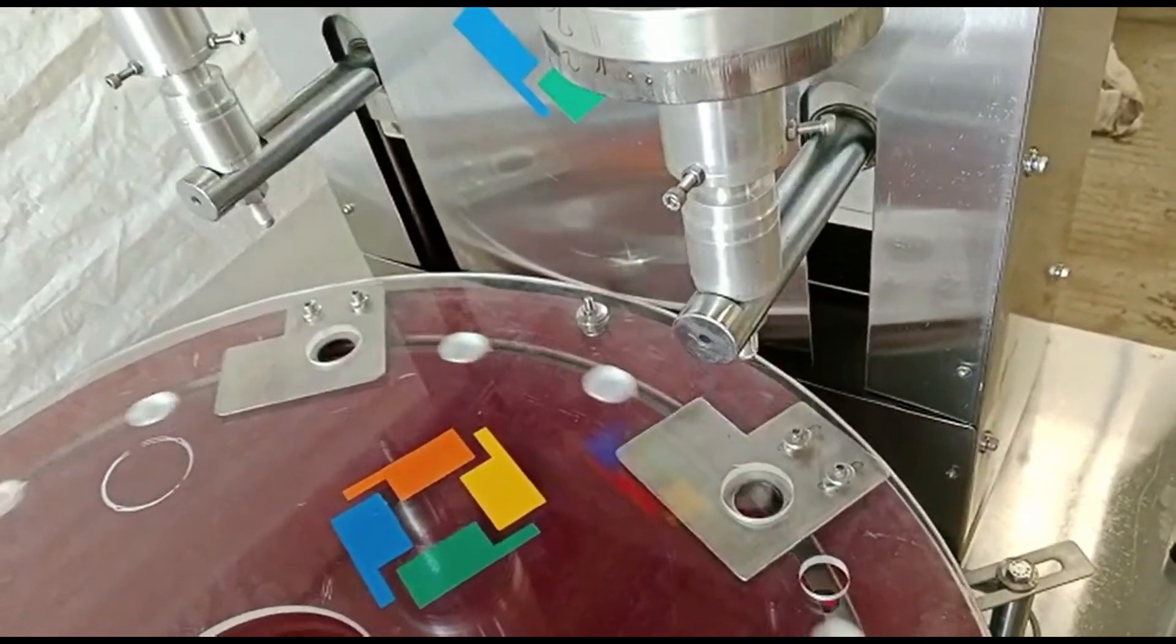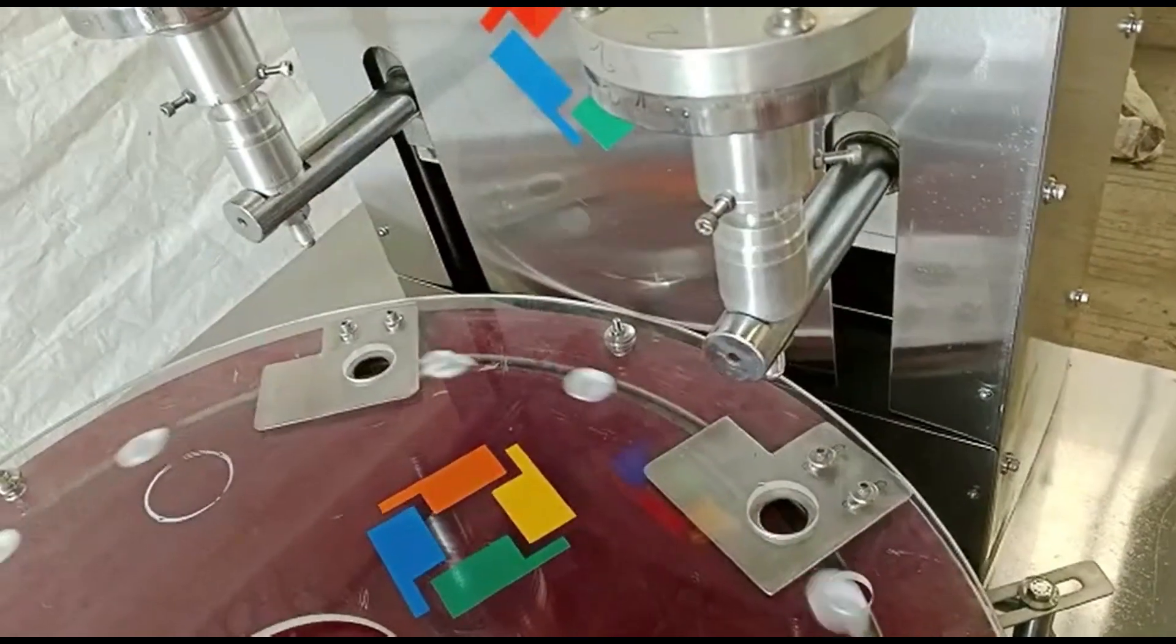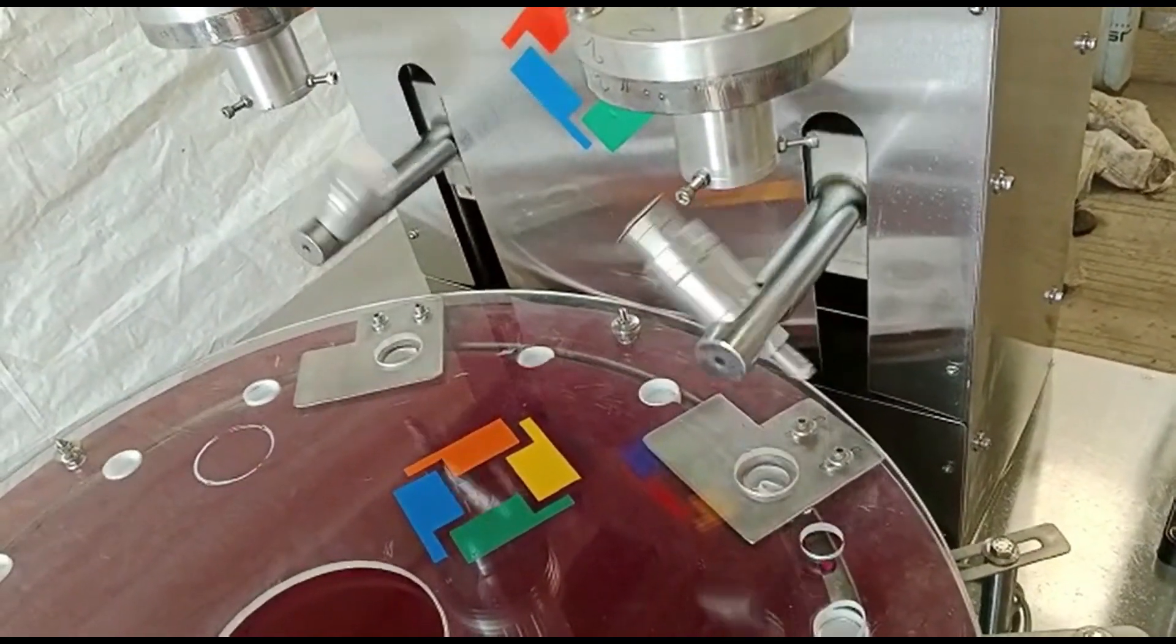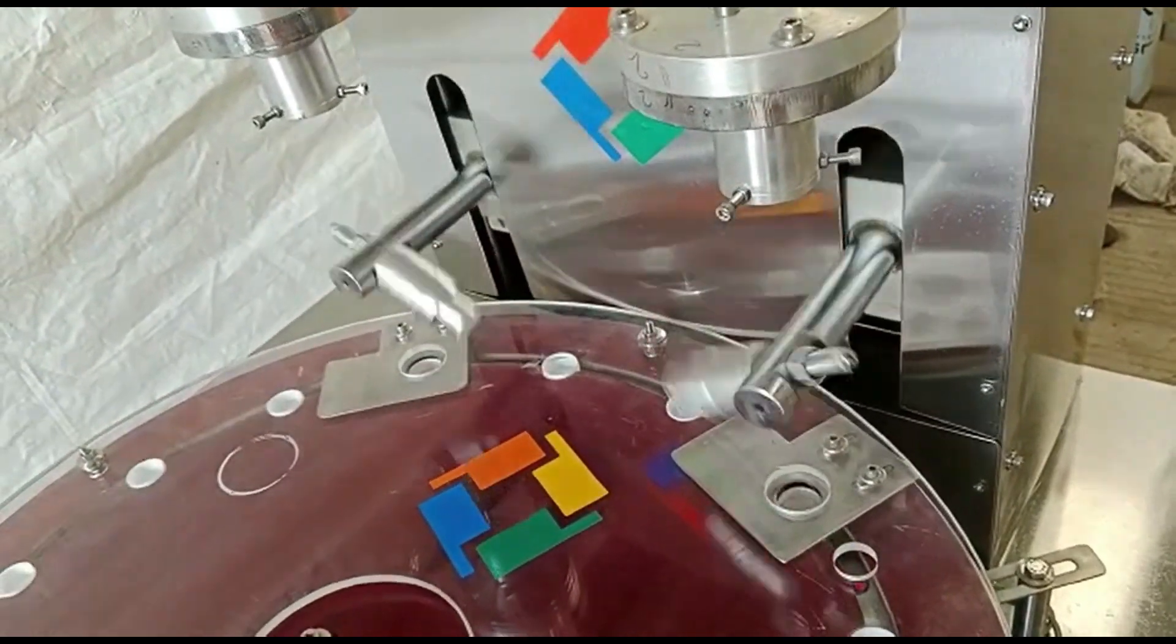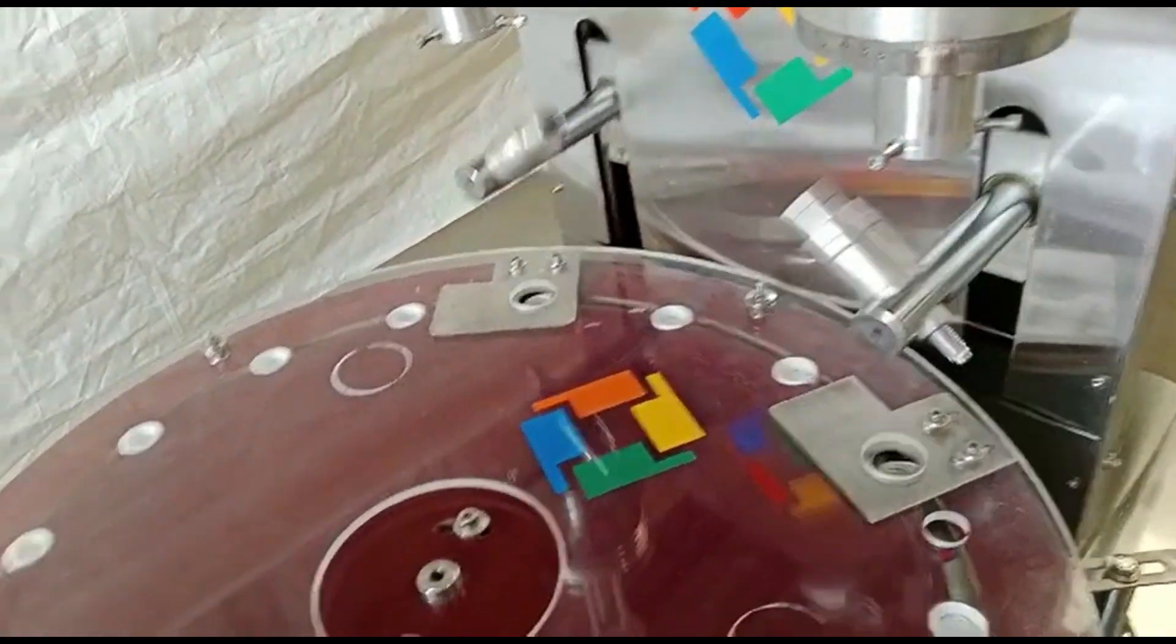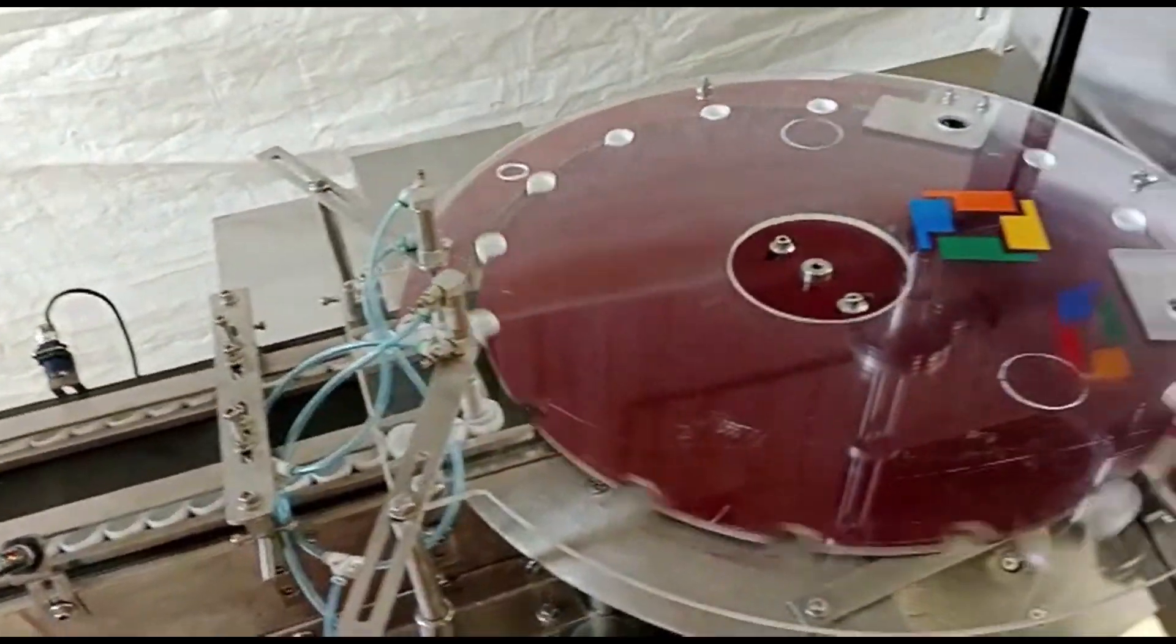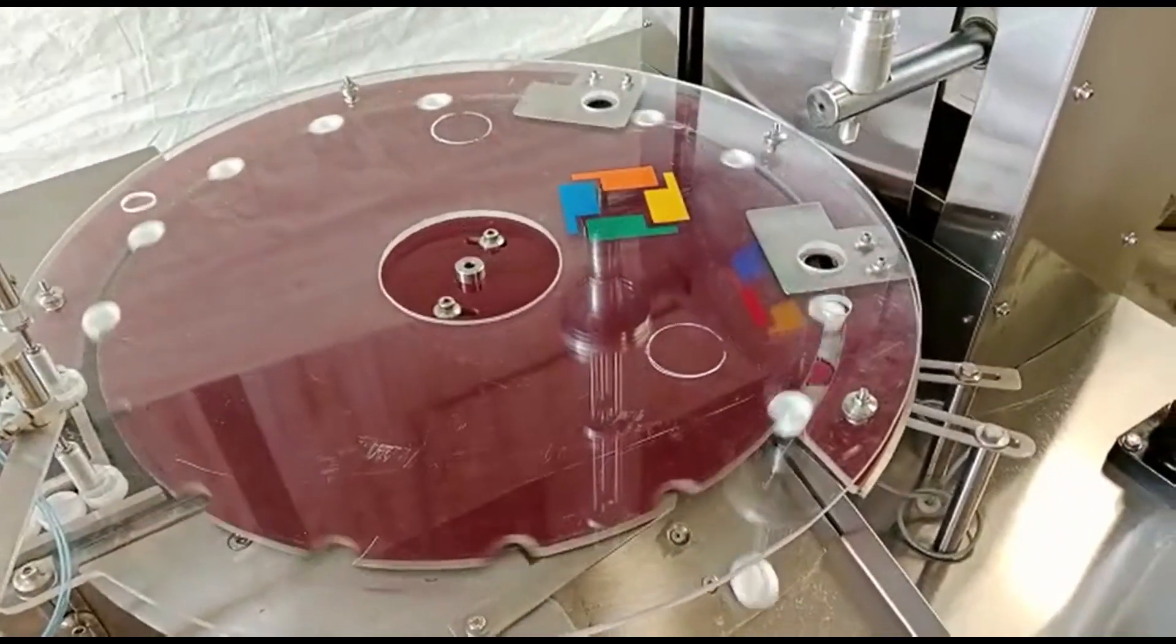In summary, a ward inserting machine is a crucial tool for the packaging industry, automating the process of inserting wards or seals into containers for secure and tamper evident packaging. It improves efficiency, consistency, and product integrity while offering versatility for various industries and applications.